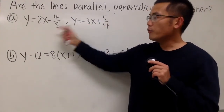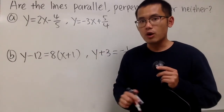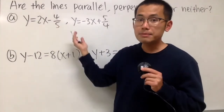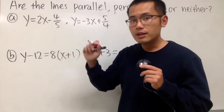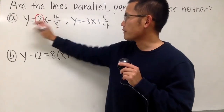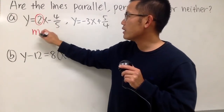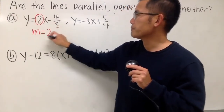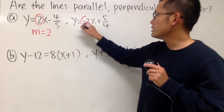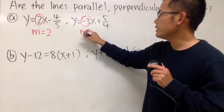Notice that both lines are already in slope-intercept form, y is equal to mx plus b. So we can see that the slope of the first line is m equals 2. Likewise, for the second line, the slope is negative 3.